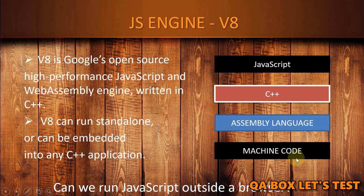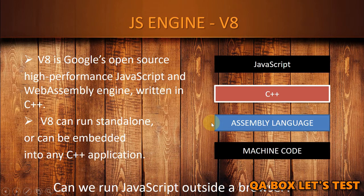Now let's understand this diagram. At the bottom of the stack we have machine code and at the top we have JavaScript. Computers understand machine code which is really powerful but is very difficult to program into. So we abstract away from it using different programming languages. We have assembly language which sits just above it but still very much like machine code. Then we have C++ which is further abstracted away quite a lot but still remains powerful. And then we have JavaScript which sits at the top of the stack, abstracted a lot away from the machine code.